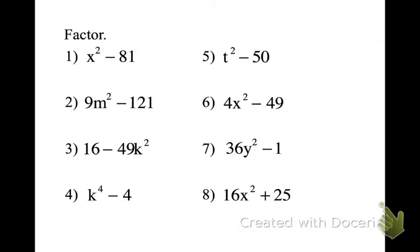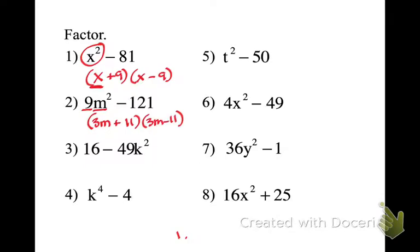Now let's check our work. We've got x plus nine times x minus nine. Notice the square root of x squared is x. If that power were different, my power would be different down here. Now notice I've got something different, I've got a coefficient. So the square root of nine is a three, the square root of m is an m, and the square root of 121 is 11. So it's 3m and 11, one's plus, one's minus.